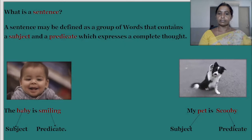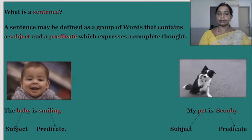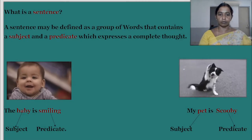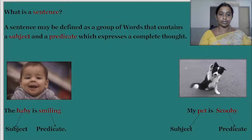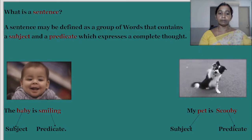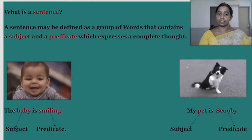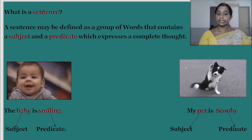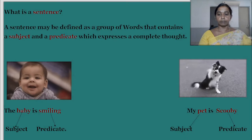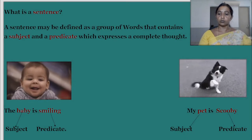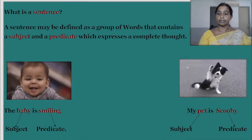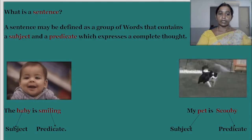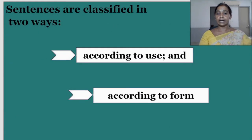A sentence may be defined as a group of words that contains a subject and a predicate, which expresses a complete thought. For you to understand better, I have given two examples: 'The baby is smiling' — here, 'the baby' is the subject and 'smiling' is the predicate. 'My pet is Scooby' — 'my pet' is the subject and 'Scooby' is the predicate. Let us move further to understand sentences.